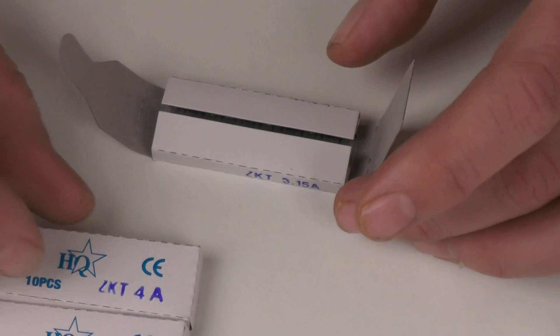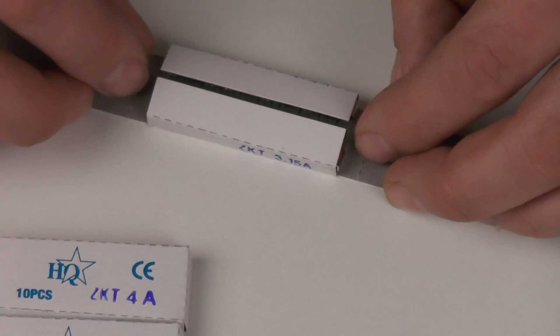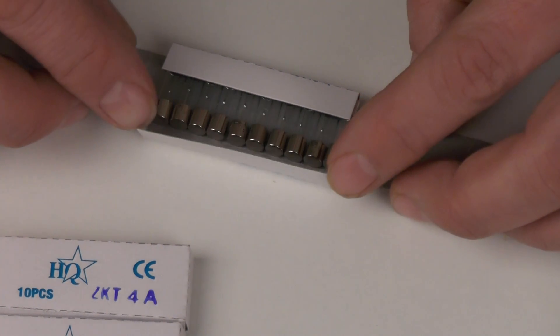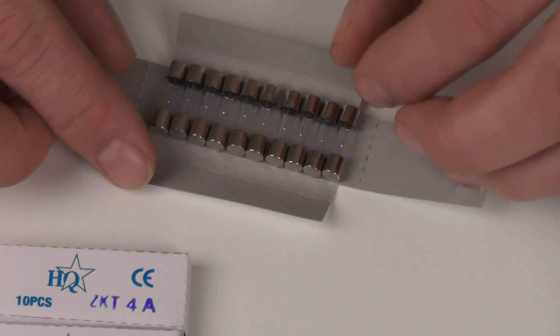So it's quite important that you do use the correct type of fuse. Putting a T fuse in place of an F is probably more acceptable but it does mean that it may take longer to fail in the event of an overload.